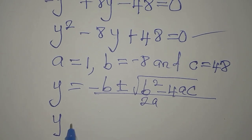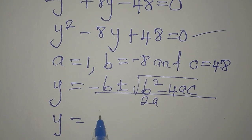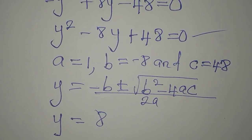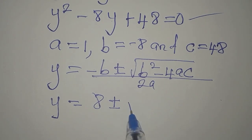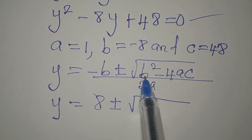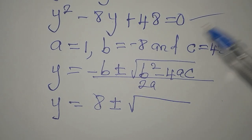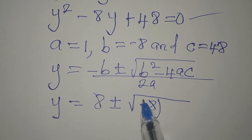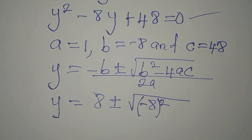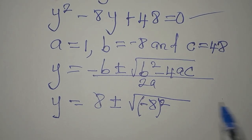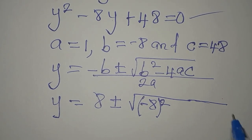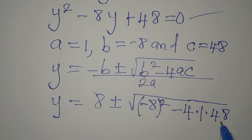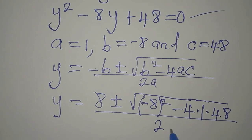So our y will now be: minus b, which is minus minus 8, so the two negatives make it positive 8. Then plus or minus the square root of: b squared — we write (minus 8) in brackets and square it, because if it is not in brackets the negative will be left out — then minus 4 times 1 times 48, where a is 1 and c is 48, divided by 2 times 1.